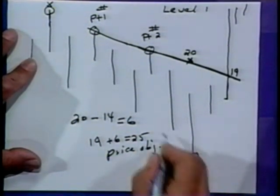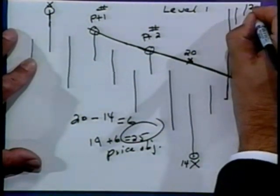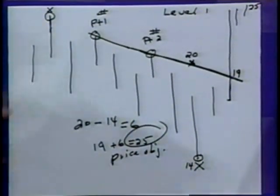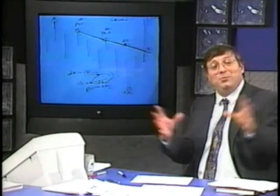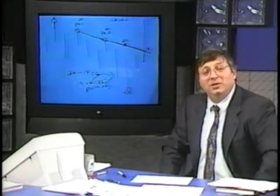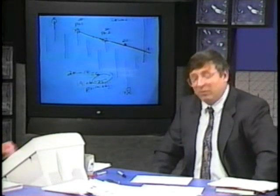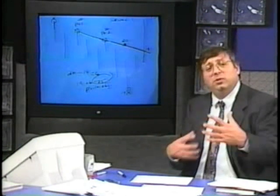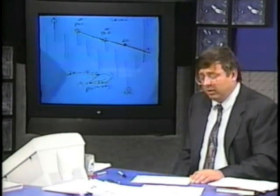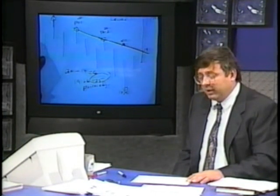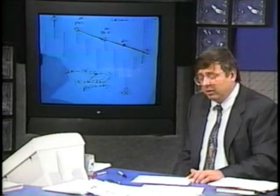So 25 is the price objective. You've taken something as simple as trend lines — something you probably never thought could mean more than just self-gratification when you drew it — and turned it into an indicator that gives you price objectives. At first this was accidental, but as I saw it and examined the process more and more, I found it occurred consistently.